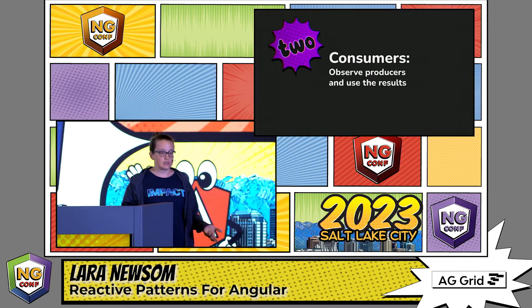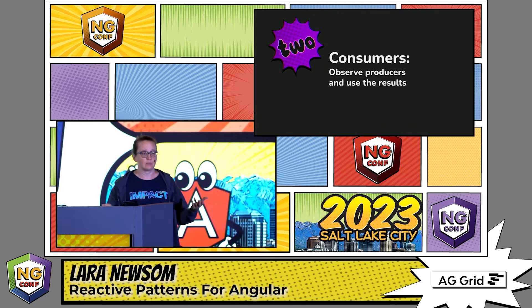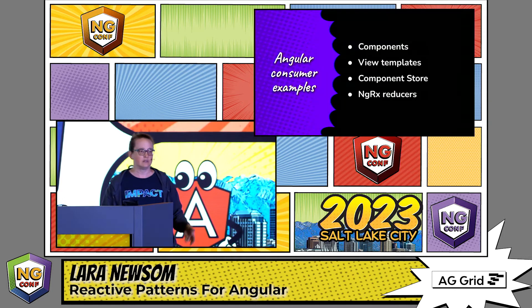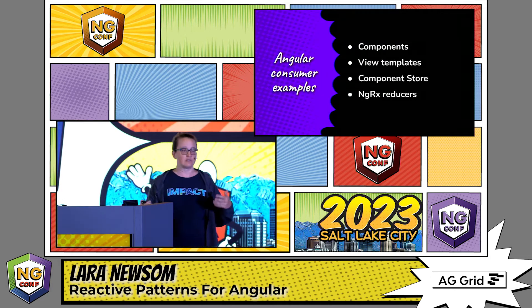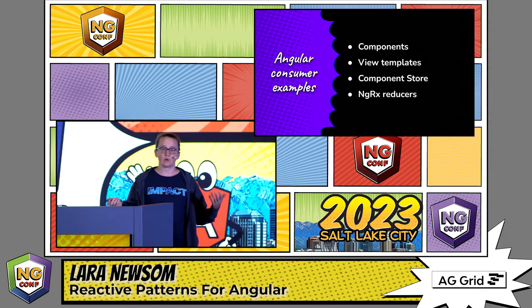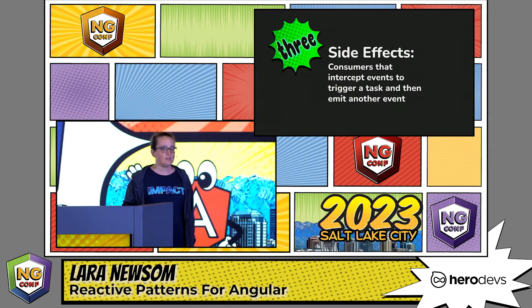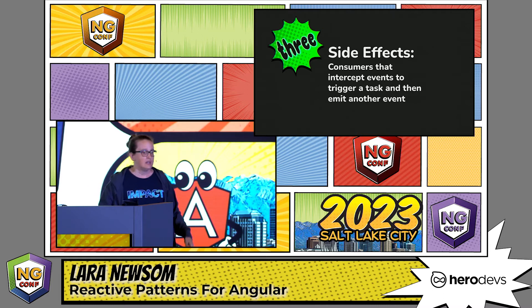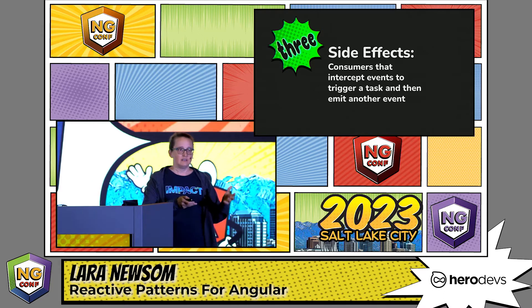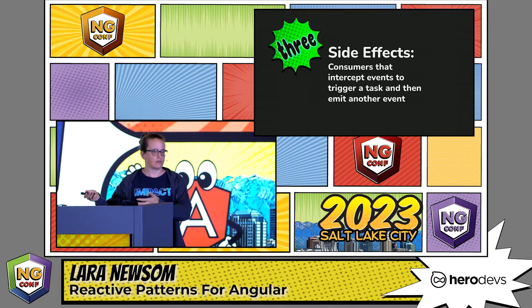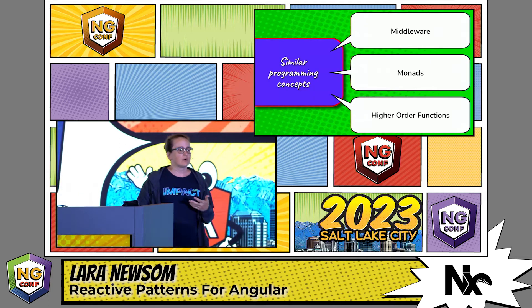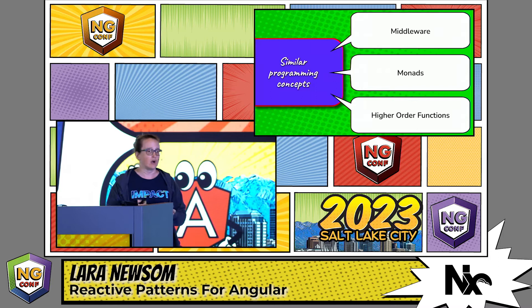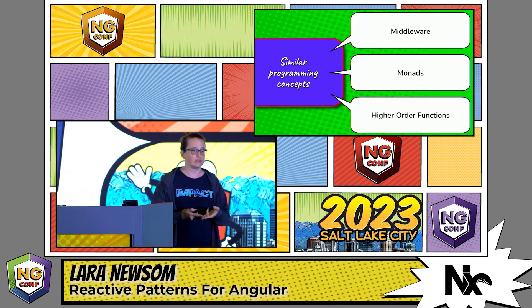Consumers are going to be observing our producers and using the results. For Angular, we've got components, view templates, and even with NGRX component store and NGRX reducers. Then we have side effects — they're a little trickier. They're basically consumers, but they'll take an event, do something, and emit another event. Similar programming concepts include middleware, monads, and higher-order functions.